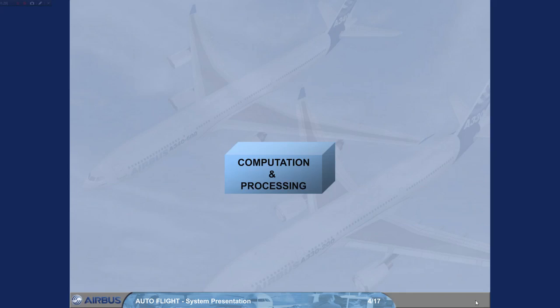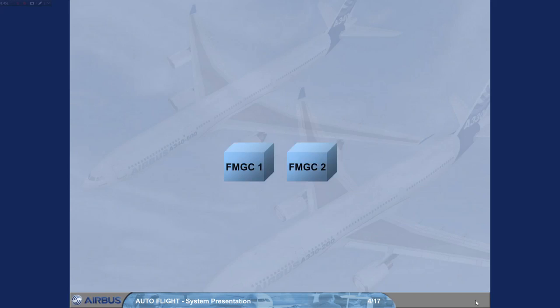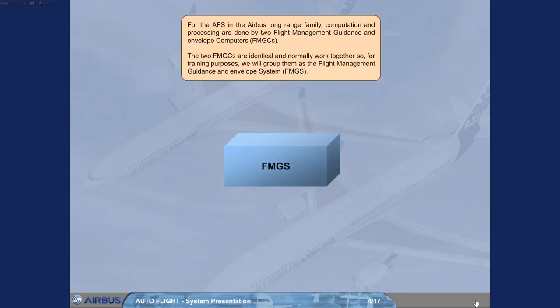For the Autoflight System in the Airbus Long Range family, computation and processing are done by two Flight Management Guidance and Envelope Computers, FMGCs. The two FMGCs are identical and normally work together, so for training purposes we will group them as the Flight Management Guidance and Envelope System, FMGS.